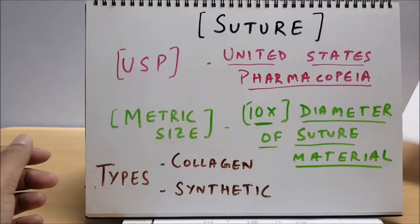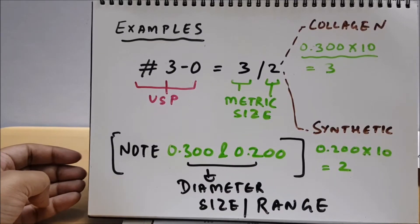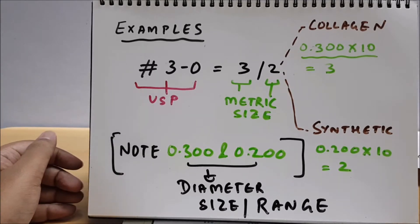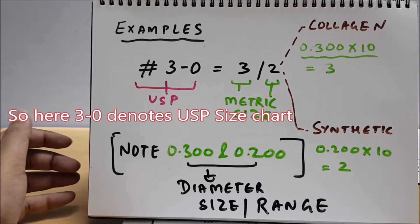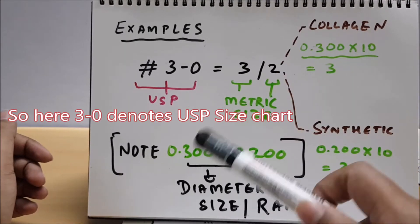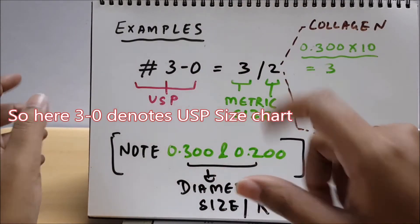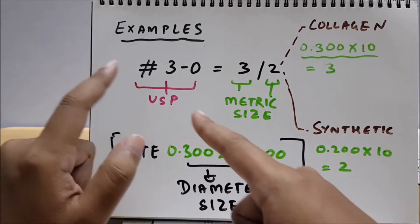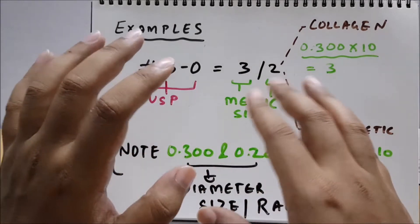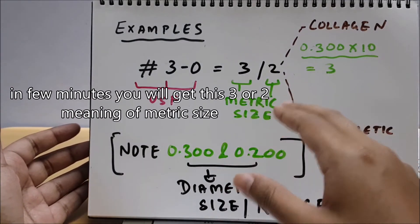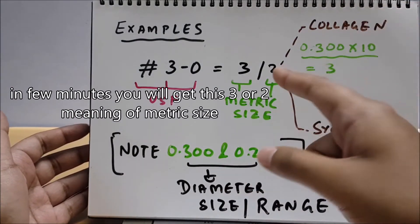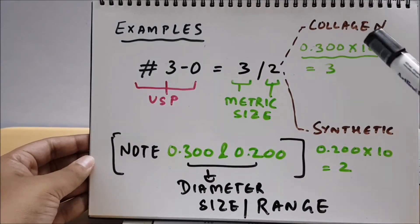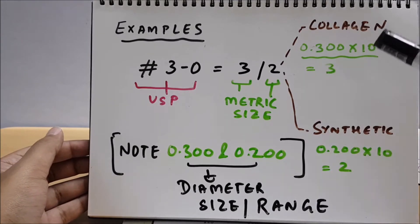Continuing this video, let us see an example. For example, I say you give me 3-0 suture. Let us see 3-0 suture means in metric size. Let us convert into metric size. It can be 3 also or 2 also, as I already discussed - USP and metric size are totally different. So what is 3 and 2? It means some diameter would have been there - it would have been 0.3 or 0.2. Now it is dividing into two parallel aspects: one is collagen suture and the other is synthetic suture.